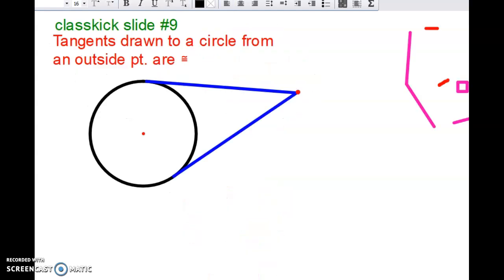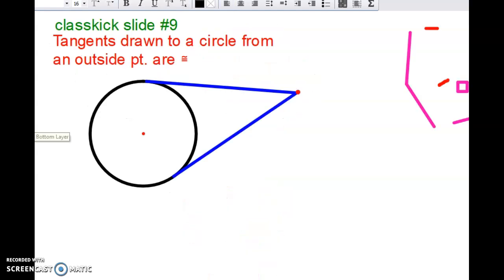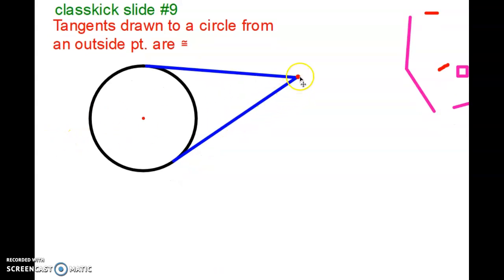And we have one last concept here. And now I'm on class kick slide 9. Tangents drawn to a circle from an outside point are congruent. So here's my outside point. Here's my blue tangent lines. We know they're going to be congruent, but I'm going to prove it to you.